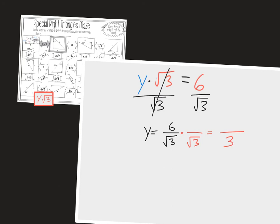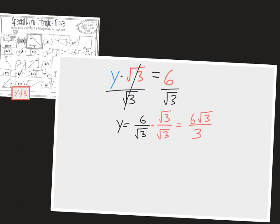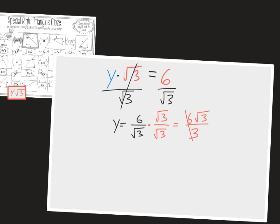But in order to not change this value here, I need to multiply by root 3 over root 3. So I'm really multiplying by 1. So now on top, I'll have 6 root 3. And then one more little step here, I can see that 6 divided by 3 is 2. And then I'll get 2 root 3, and I'll get the exact same thing that I got when I was just kind of thinking about what Y would be. But that's a more algebraic approach to solving for it.